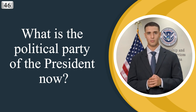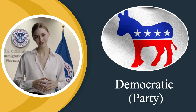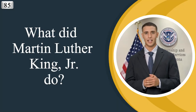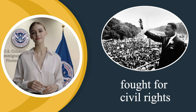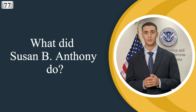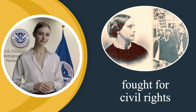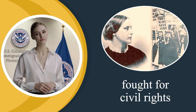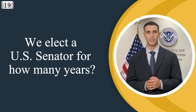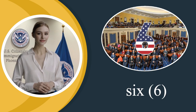What is the political party of the President now? Democratic Party. What did Martin Luther King Jr. do? Fought for civil rights. What did Susan B. Anthony do? Fought for civil rights. We elect a U.S. Senator for how many years? Six.